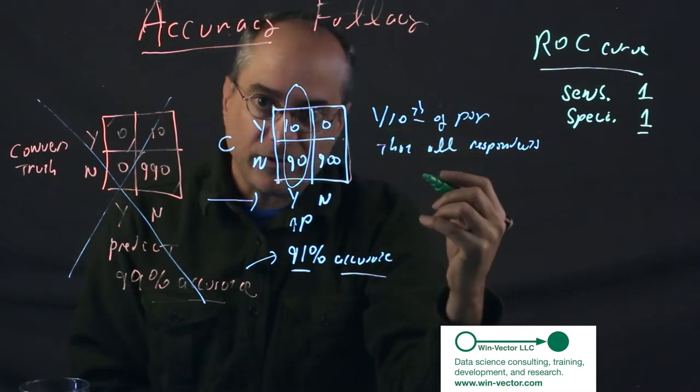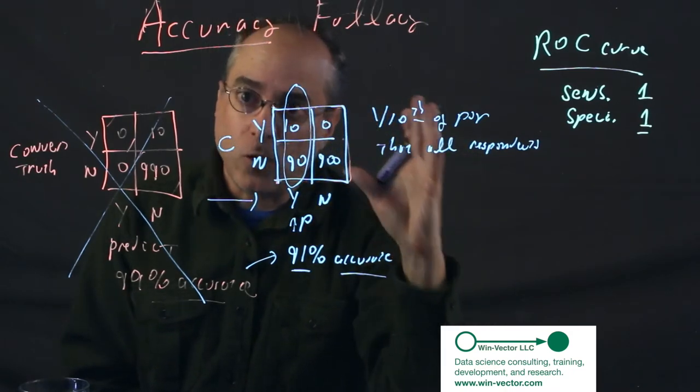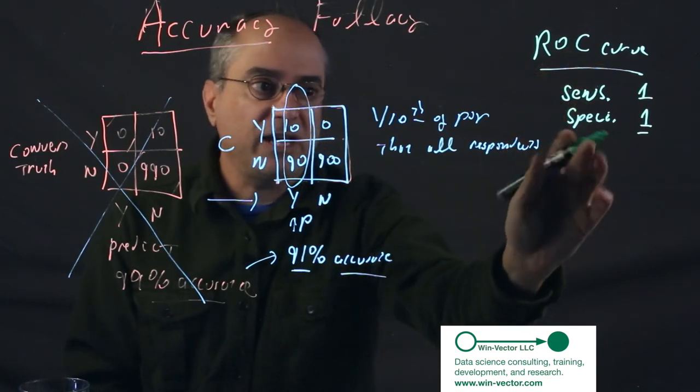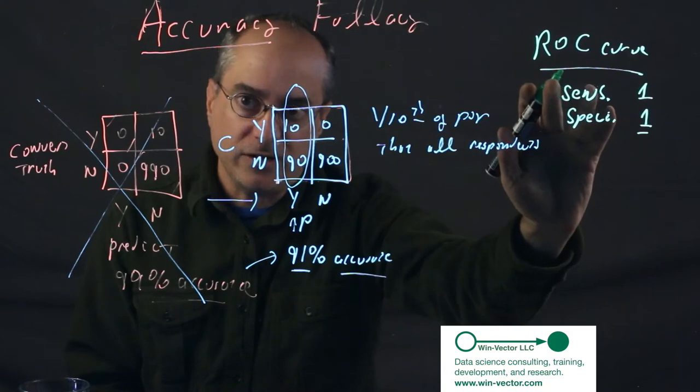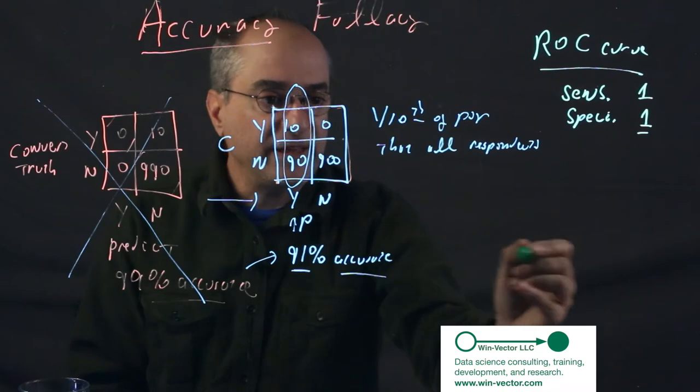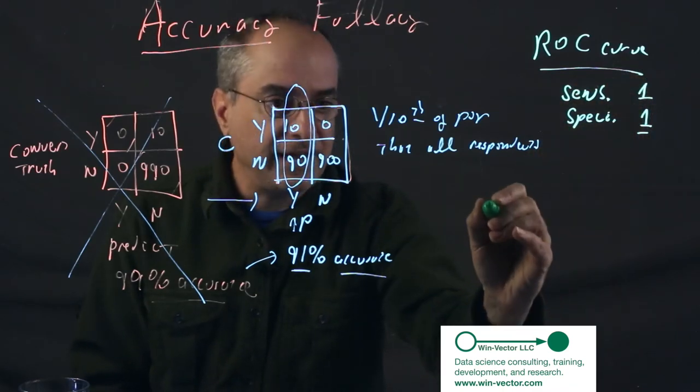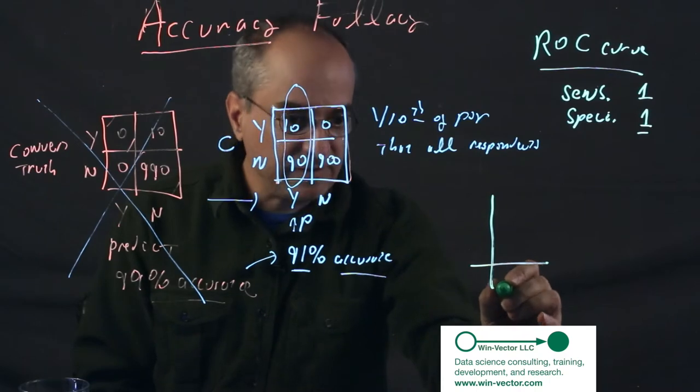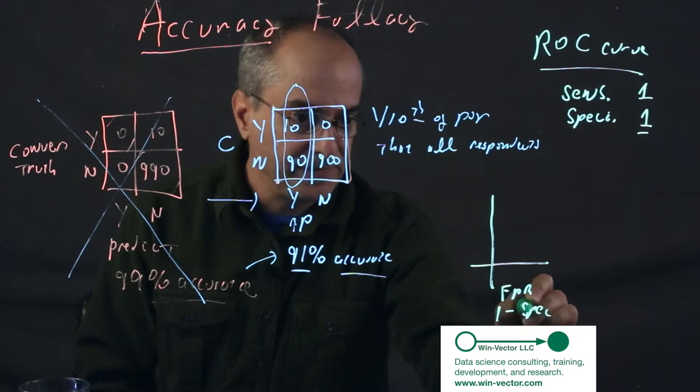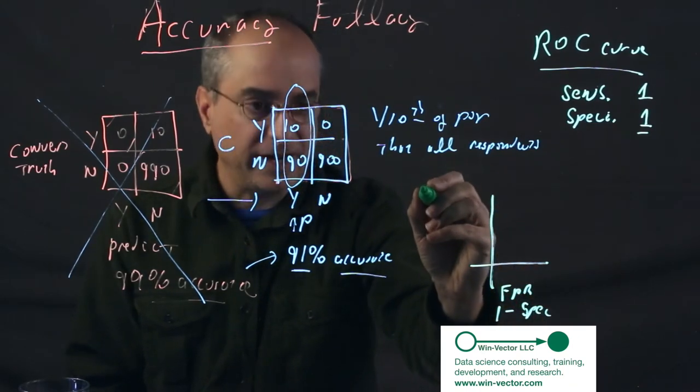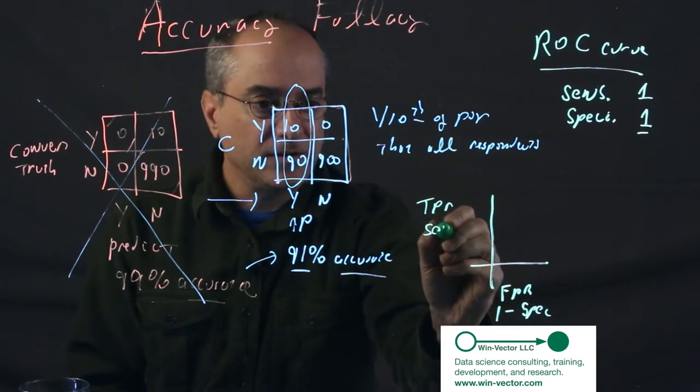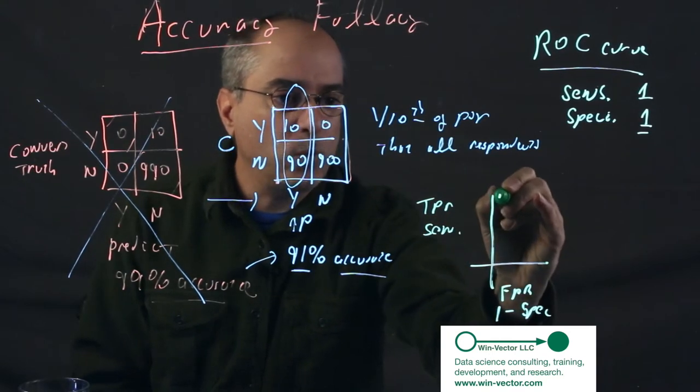Usually the classifier you want is a scoring system, not a classification rule. You want one that for any specification of specificity can tell you the best sensitivity you can achieve or for any specification of sensitivity, the best specificity you can achieve. And that is usually summarized in the ROC curve. And that is this plot where the x-axis is the false positive rate or 1 minus specificity. And the y-axis is the true positive rate or the sensitivity.